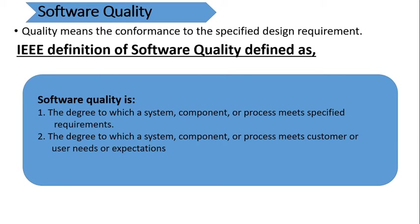The requirements include requirement specifications, design specifications, as well as customer needs and expectations. According to the IEEE standard, quality is defined as the degree to which a system, component, or process meets specified requirements, or meets the customer or user needs and expectations. In short, quality means all requirements given by the customer for design and specification purposes are fulfilled in that software.